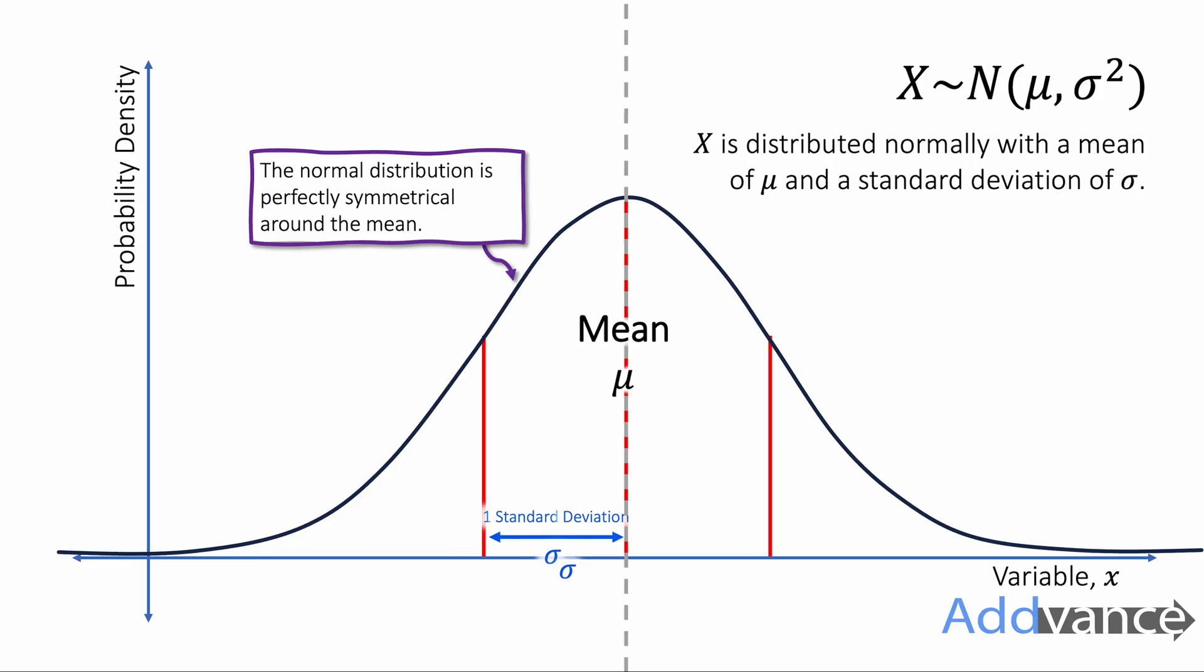The symbols we use for that are on screen. It says x is distributed normally for whatever the mean is and the standard deviation. We use these symbols up here.